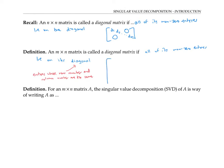So for example, here's a four by two diagonal matrix, and here's a three by five diagonal matrix.